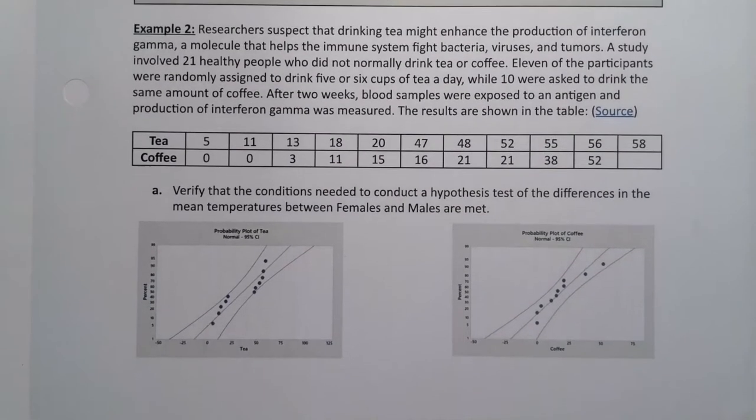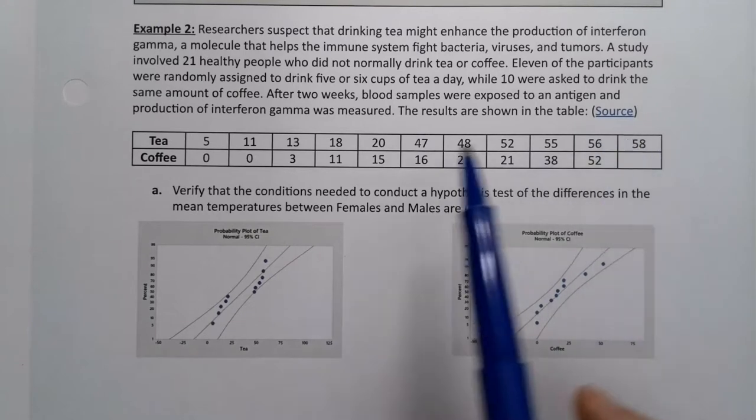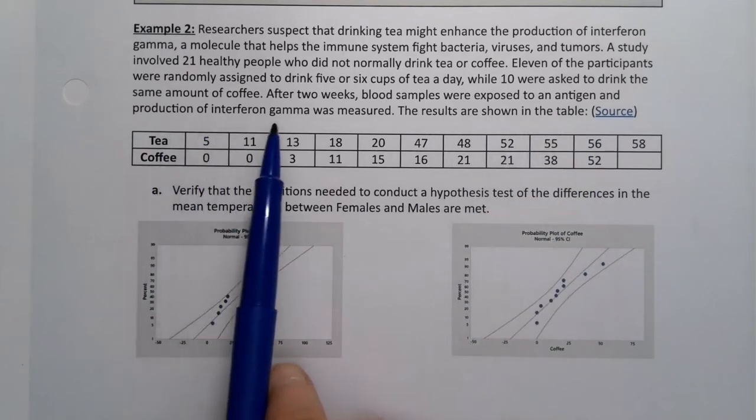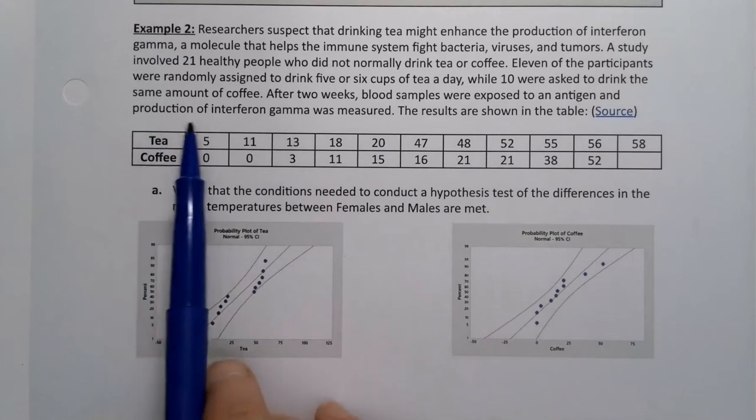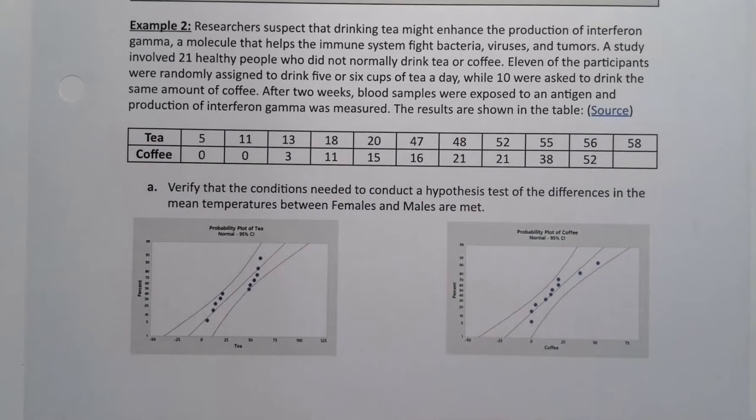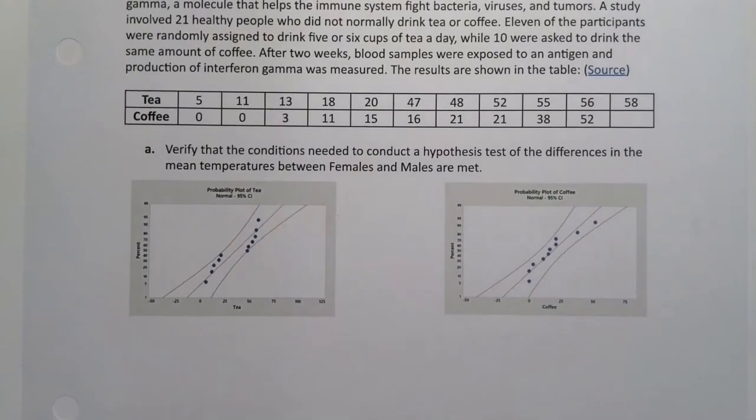So researchers suspect that drinking tea might enhance the production of interferon gamma, a molecule that helps the immune system fight bacteria, viruses, and tumors. A study involved 21 healthy people who did not normally drink tea or coffee. 11 of the participants were randomly assigned to drink five or six cups of tea a day, while 10 of them were asked to drink the same amount of coffee. After two weeks, blood samples were exposed to an antigen and production of interferon gamma was measured. The results are shown in the table.